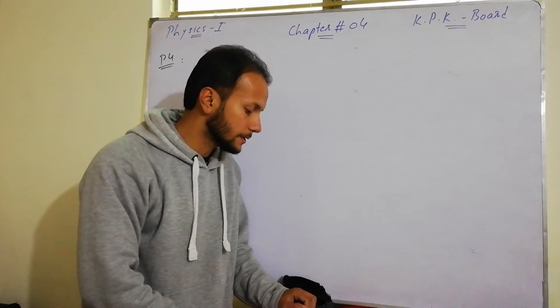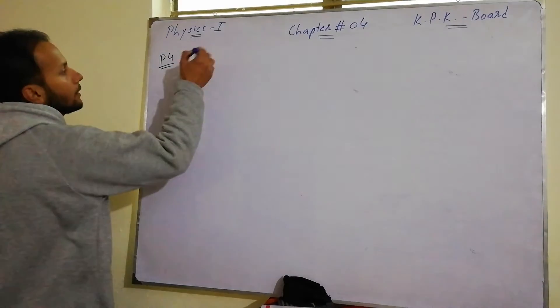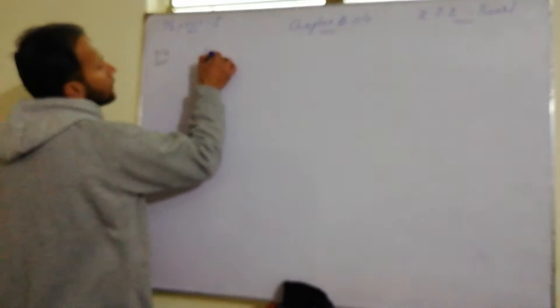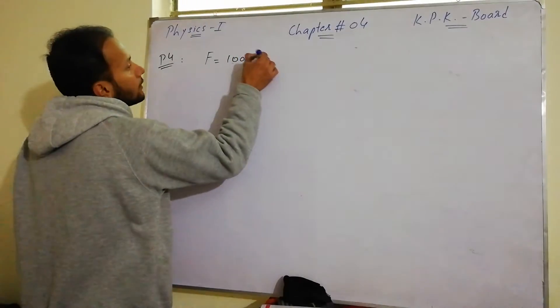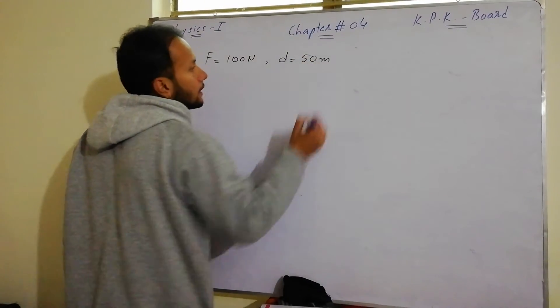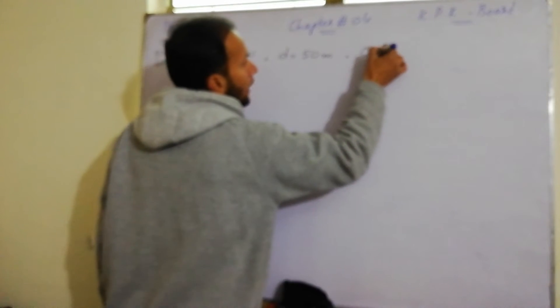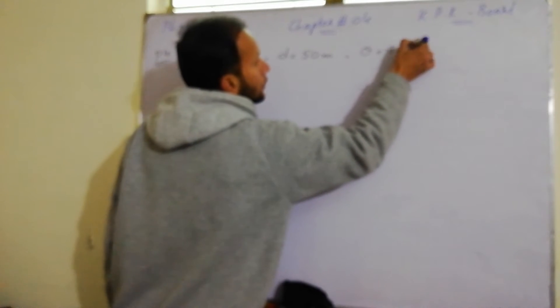100 newton which makes an angle of 30 degree with horizontal. So data given is the force of 100 newton, distance is 50 meters and angle of 30 degree which is horizontal.